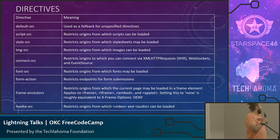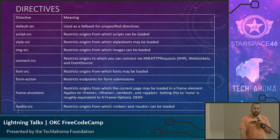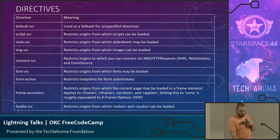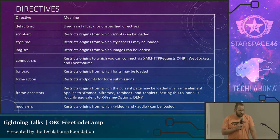Here's a table of all the directives we can use. Default-src, script-src, style-src, and img-src basically say where we can load scripts, images, and styles from. Connect is important — it restricts where XMLHttpRequests, WebSockets, and EventSource connections can go. Font-src allows us to restrict where fonts can be loaded from. Another important one is frame-ancestors, which restricts origins from which the current page can be embedded in frames, iframes, embeds, and applets. If we set this to none, it's roughly the equivalent of setting the X-Frame-Options header to deny.